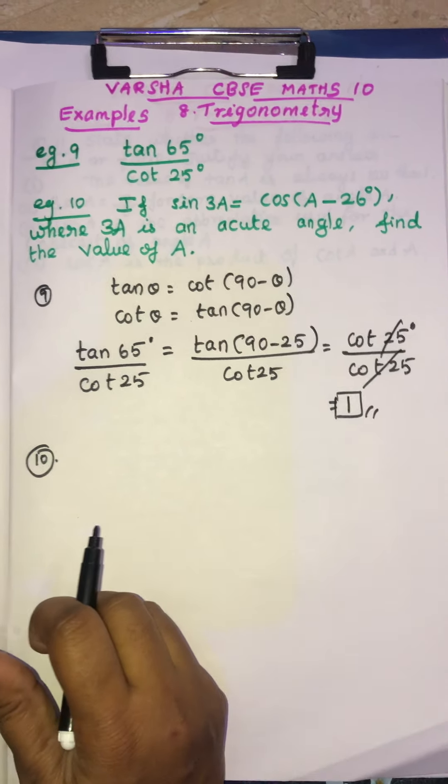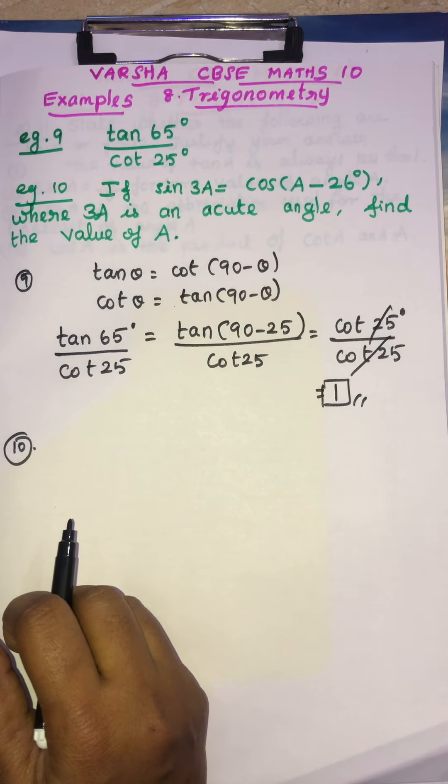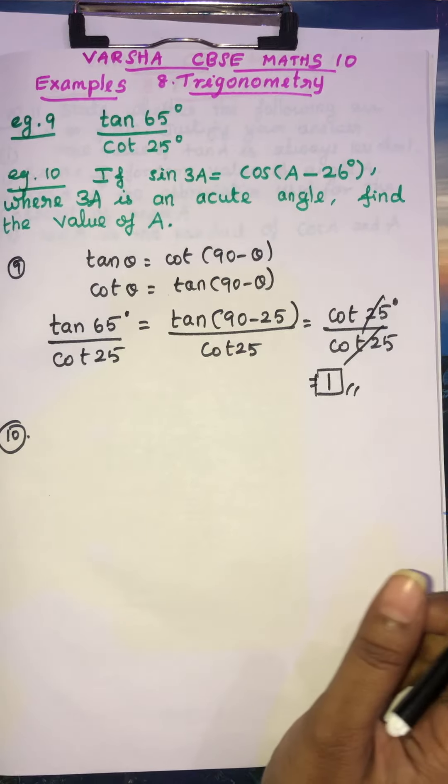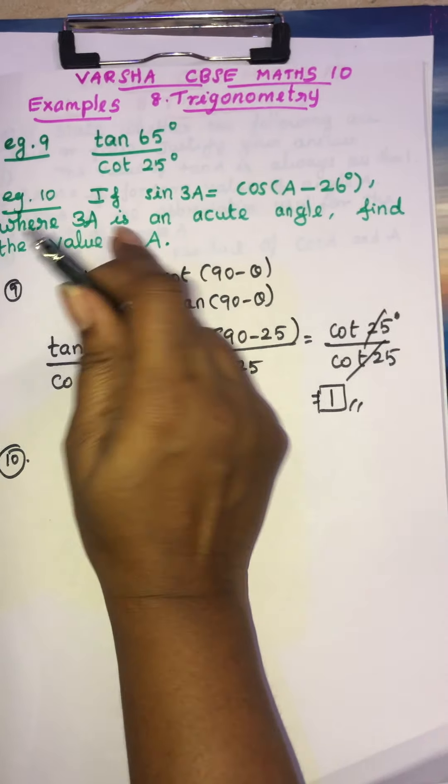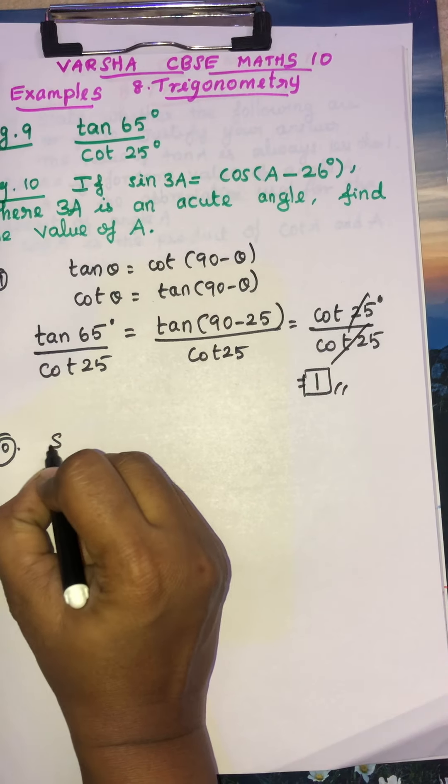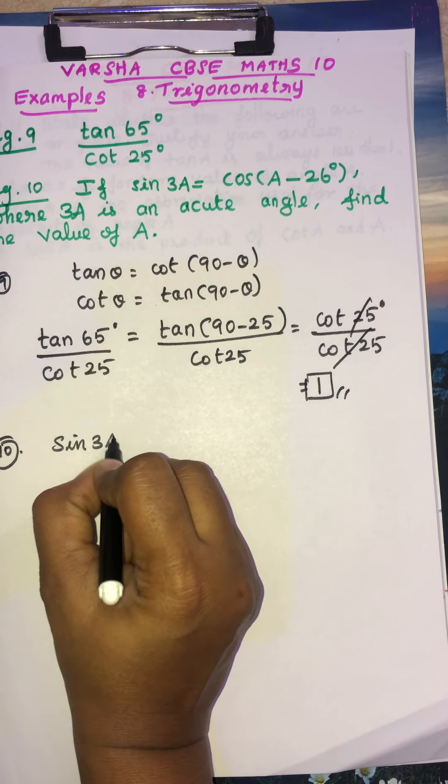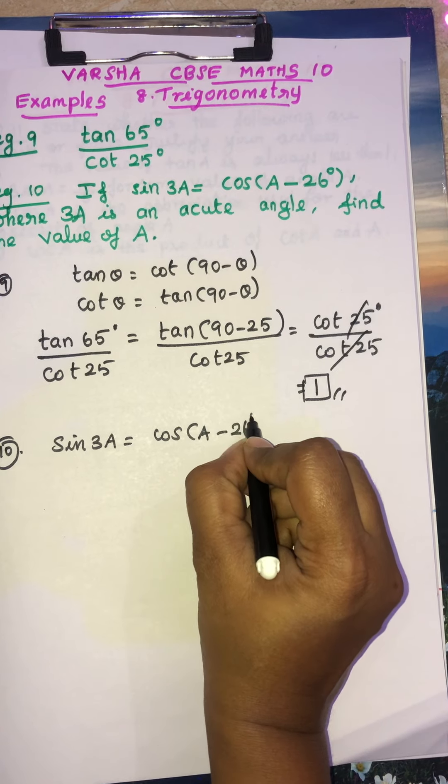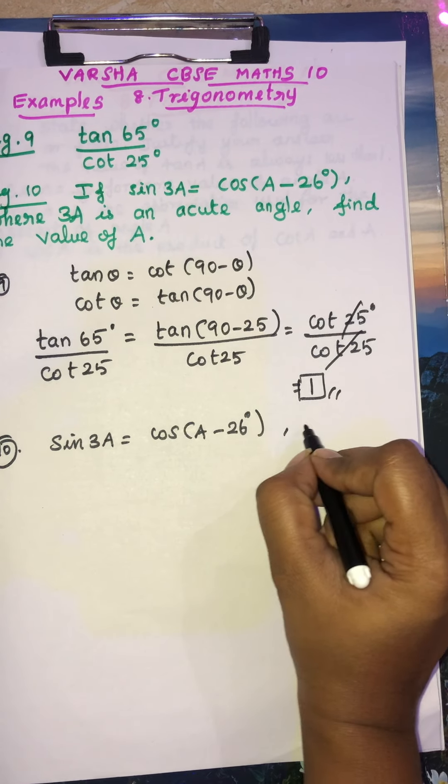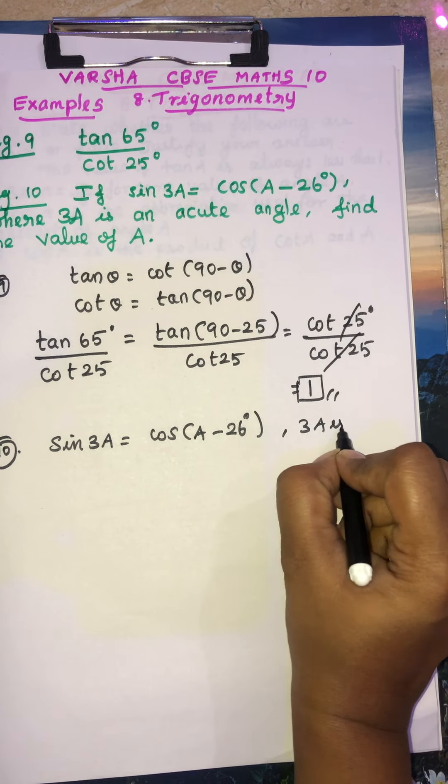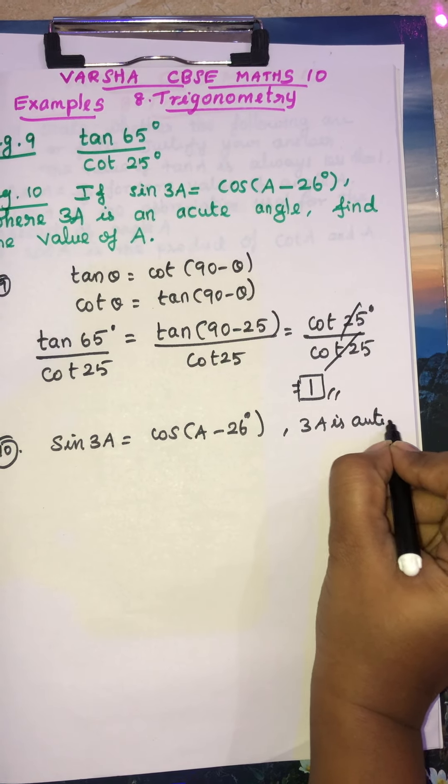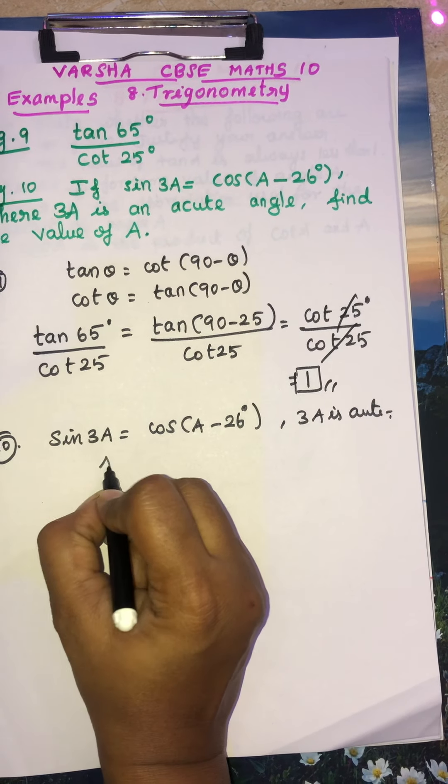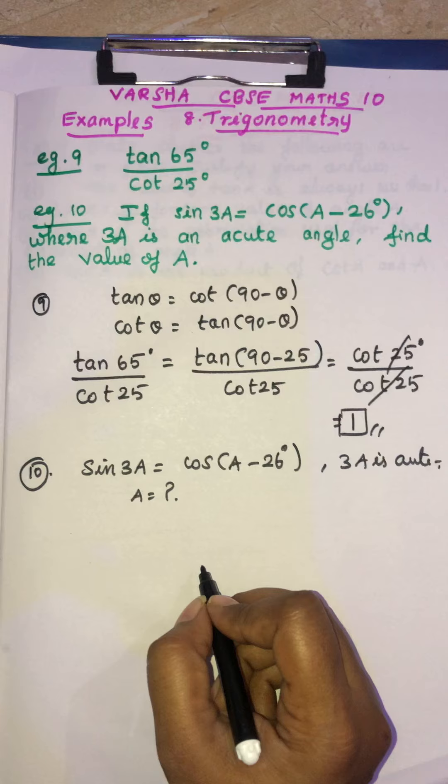Then tenth question. See what is that? Tenth question. See this question will be easy but you will use that carefully. So if sin 3a equal to cos a minus 26 degree. So 3a is acute angle. Find the value of a. So this is our question.